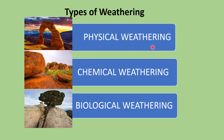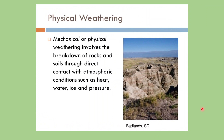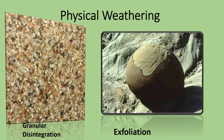Physical weathering is the mechanical disintegration or breaking down of rocks without any change in their chemical composition. It mainly takes place due to atmospheric conditions such as heat, water, ice, and pressure. Temperature variation is one of the main causes of the breaking down of rocks.